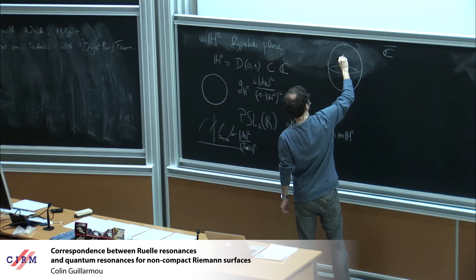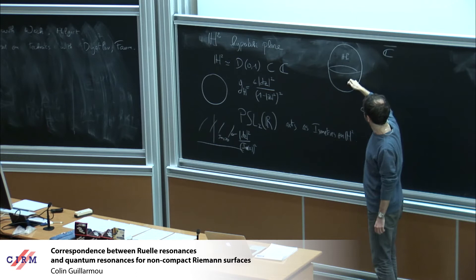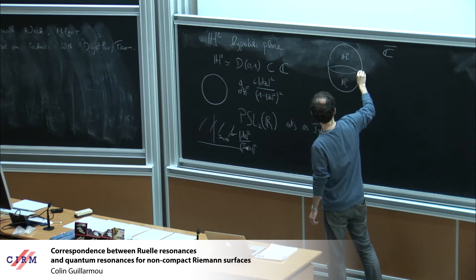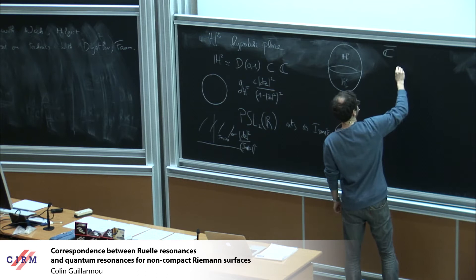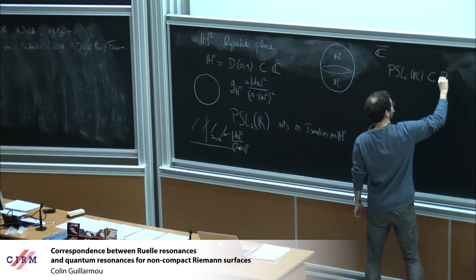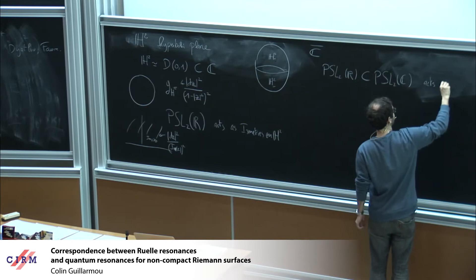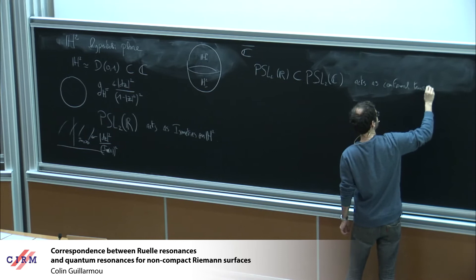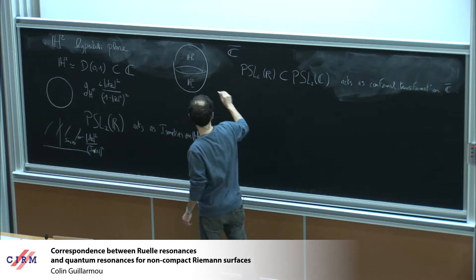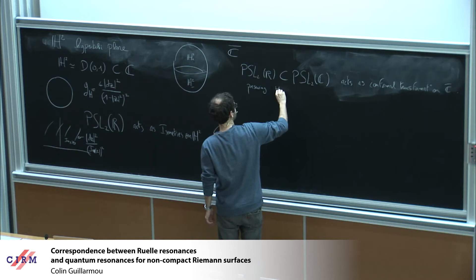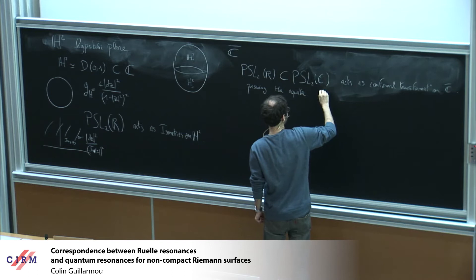It will be convenient to also consider the Riemann sphere, where you can view H²₊, because in the unit sphere you have two copies of H². The equator is just the boundary — the real line in the half-space model. PSL(2,ℝ) can be viewed as a subgroup of PSL(2,ℂ) acting as conformal transformations, preserving the equator, which is the real line where Im z = 0.